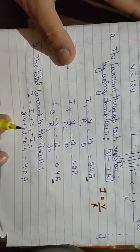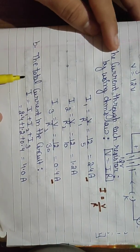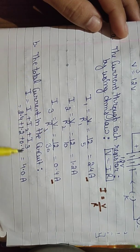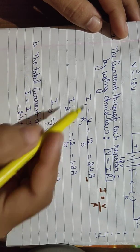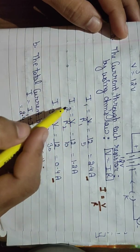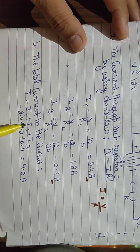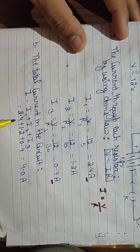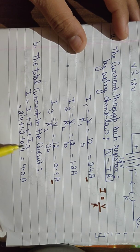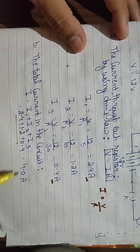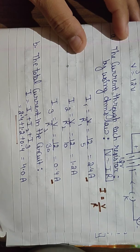For Part B — total current in the circuit. The total current is the sum of all individual currents: I = I1 + I2 + I3 = 2.4 + 1.2 + 0.4 = 4.0 ampere.